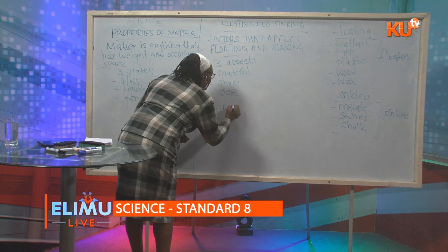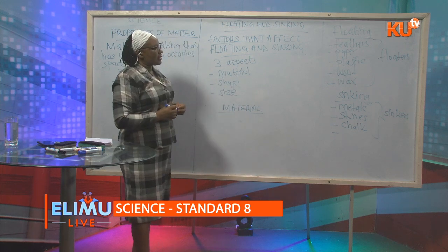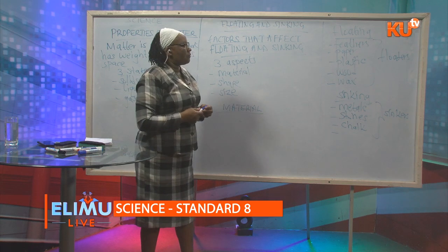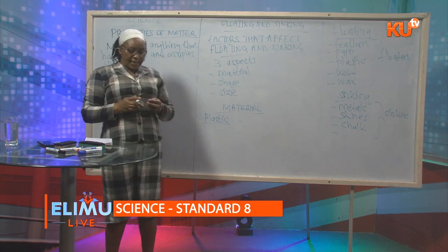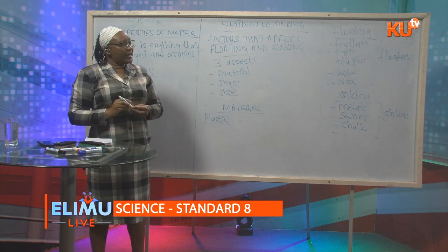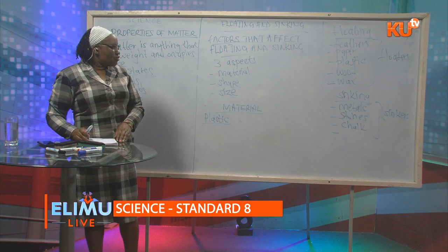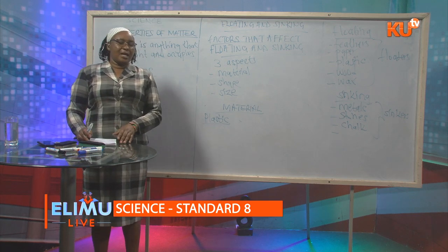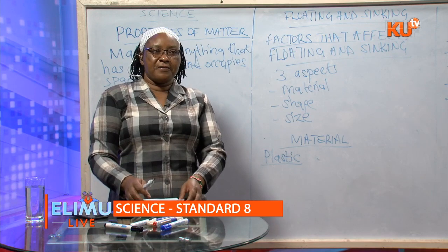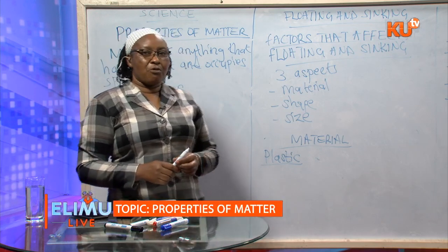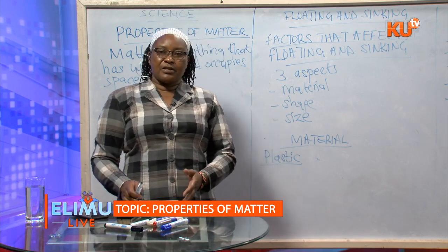We start with material. Let's take an example of plastic. You can take items made of plastic — compare small items and big items, some heavier than others. You can take a plastic cup and a plastic bucket. These are not the same size and not the same weight, but when you put both of them in water, they will always float regardless of their sizes or weights.